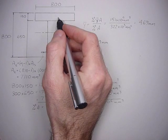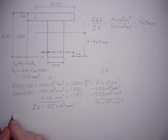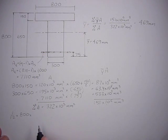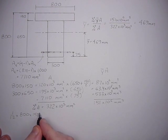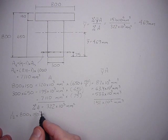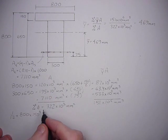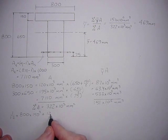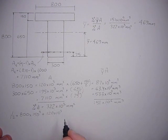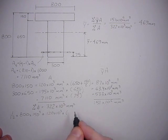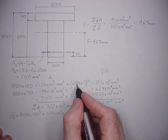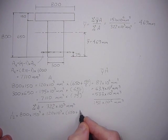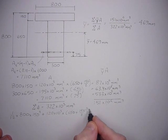The inertia of the flange is 1/12 times 800 times 150 cubed plus its area, which is 120 times 10 to the third, times its centroid, which is 650 plus 150 over 2 squared.